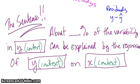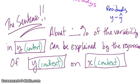About blank percentage — got to fill this in — of the variability in Y (make sure it's in context) can be explained by the regression of Y in context on X in context. That's the sentence. Don't forget it. You will see it again.